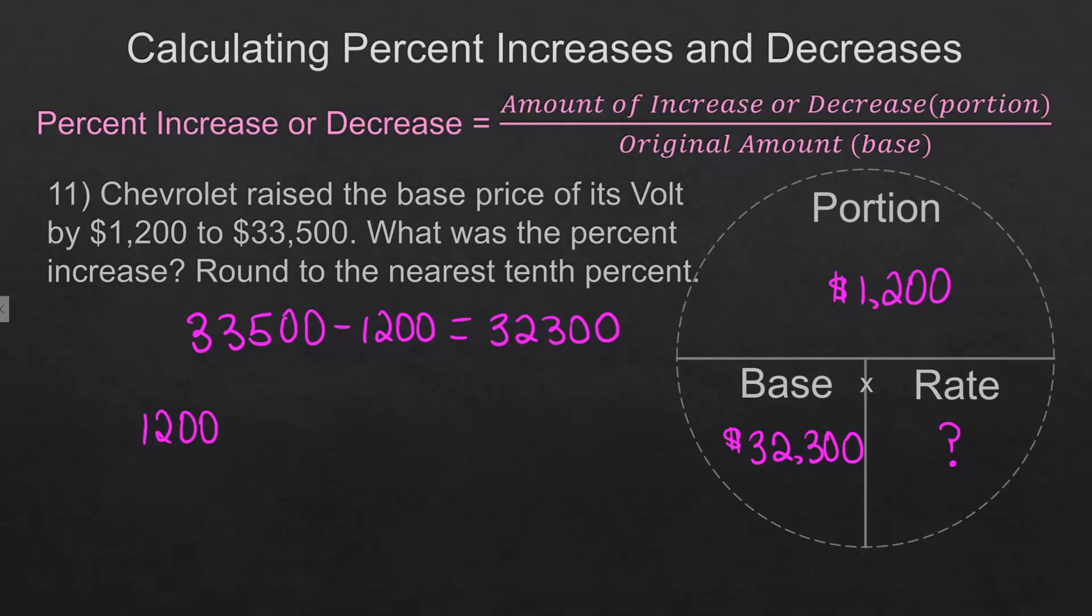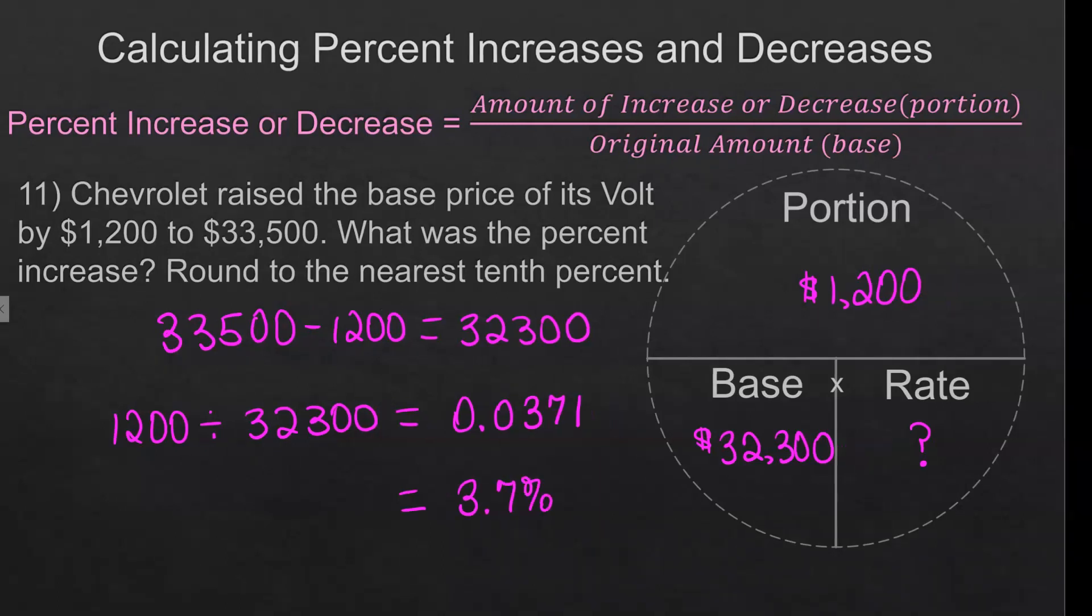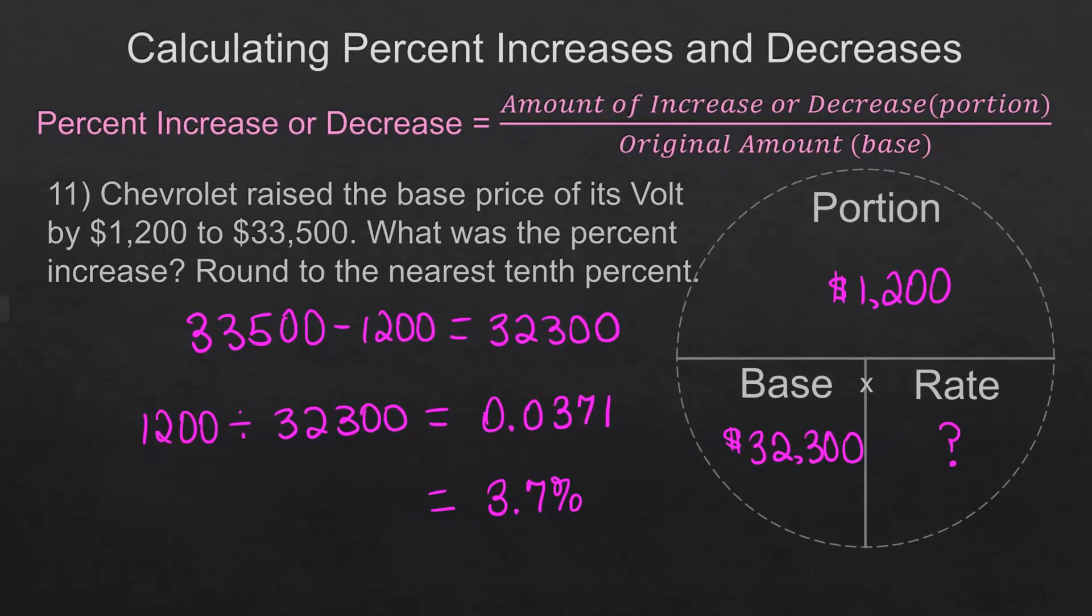So $1,200 divided by $32,300 would be 0.0371. And that may seem like that's a pretty small increase. And it is. We're going to write that in percent form. So that's 3.7%. And that is our percent of increase in this case. And so that is the end of the video.